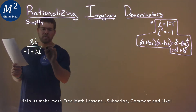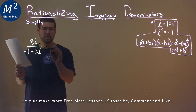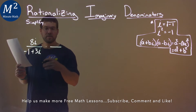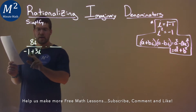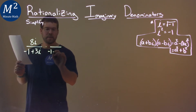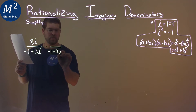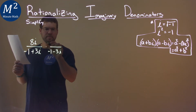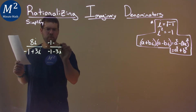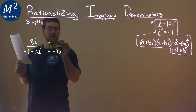I'm going to multiply this by the denominator's complex conjugate. Negative 1 plus 3i becomes negative 1 minus 3i. And then we repeat that in the numerator: negative 1 minus 3i.